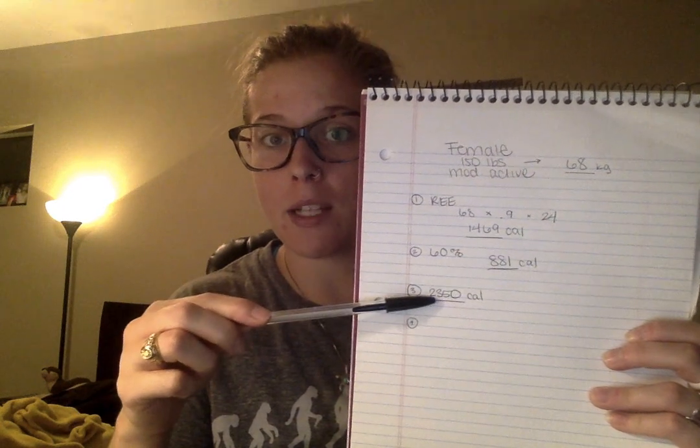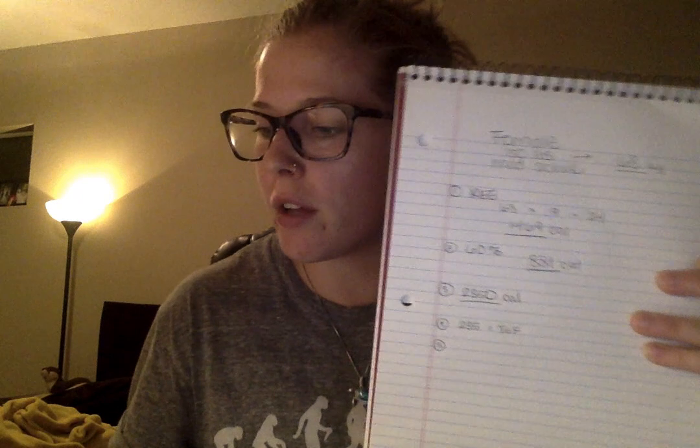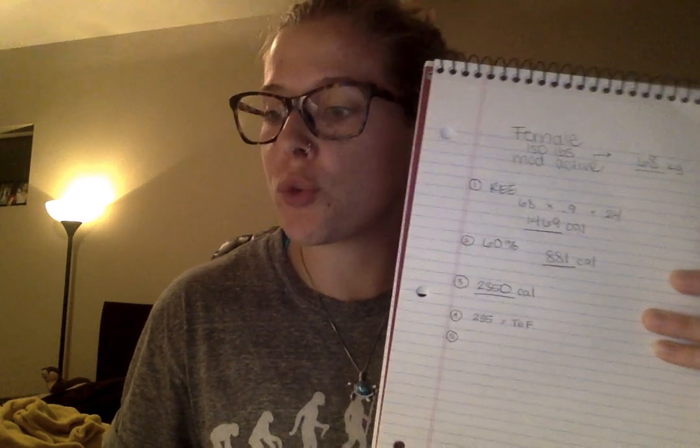Now the last piece is the thermic effect of food, which is simply 10% of the resting energy expenditure plus the activity level — that number we just figured out. So I take 2350 and multiply by 0.1, which gives me 235 calories as my TEF. The very last step is to add all three components together. I already added the first two, so I add 2350 plus 235, which gives me 2,585.